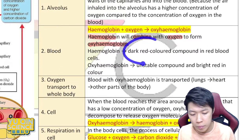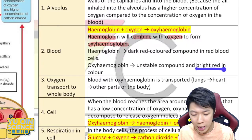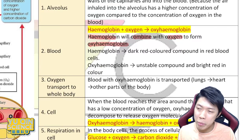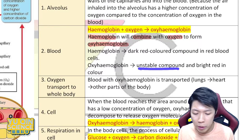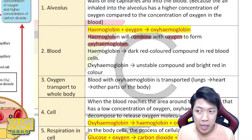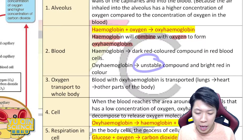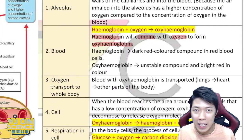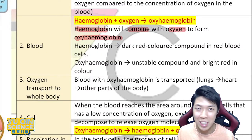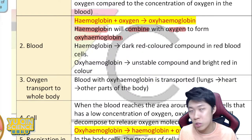Hemoglobin is a dark red material. It combines with oxygen and becomes bright red color — like a fresh color. Oxy-hemoglobin is an unstable compound, meaning it can be split easily when it arrives at the body cell. We want them to be unstable — easy to separate — so that when they reach the body cells they can release the oxygen easily.